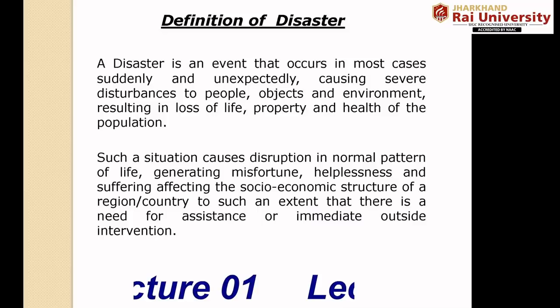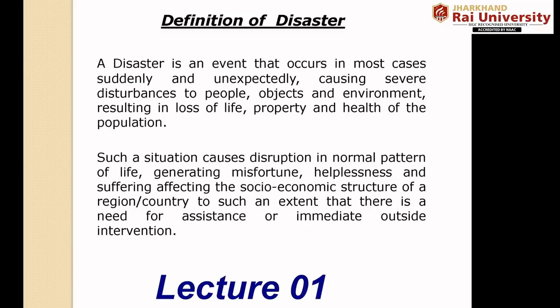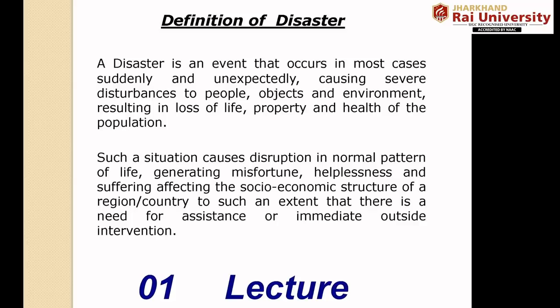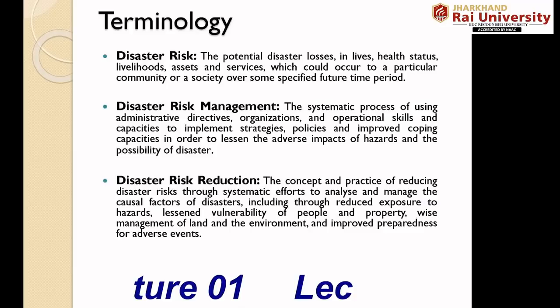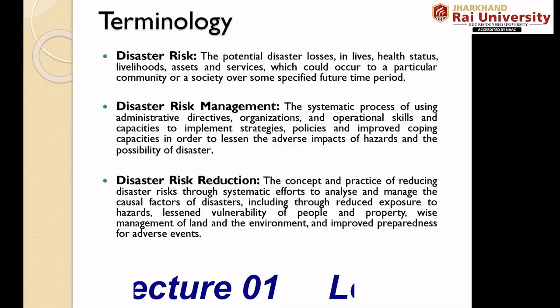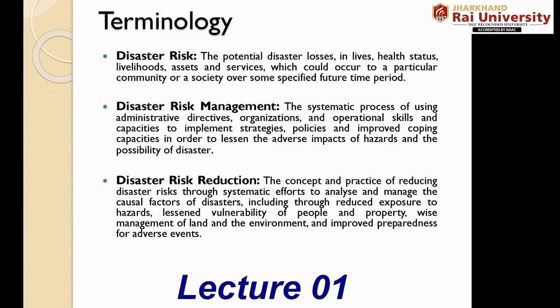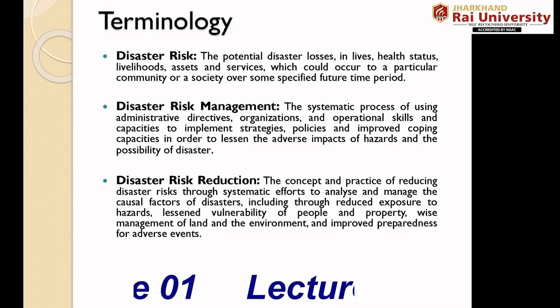From this slide, you can see that a disaster is an event that occurs in most cases suddenly and unexpectedly. Now there are some new terminologies you need to know — otherwise you cannot follow our further lectures. The first one is disaster risk. Risk occurs when a community is exposed to hazards and is likely to be adversely affected through its impact.